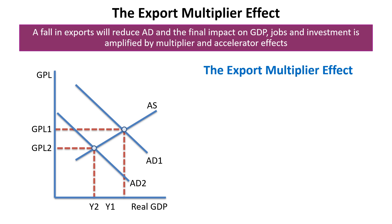Another thing to consider is the export multiplier effect. A fall in exports won't just reduce aggregate demand once — the final impact on GDP, jobs, and investment is amplified, multiplied by the multiplier and accelerator.